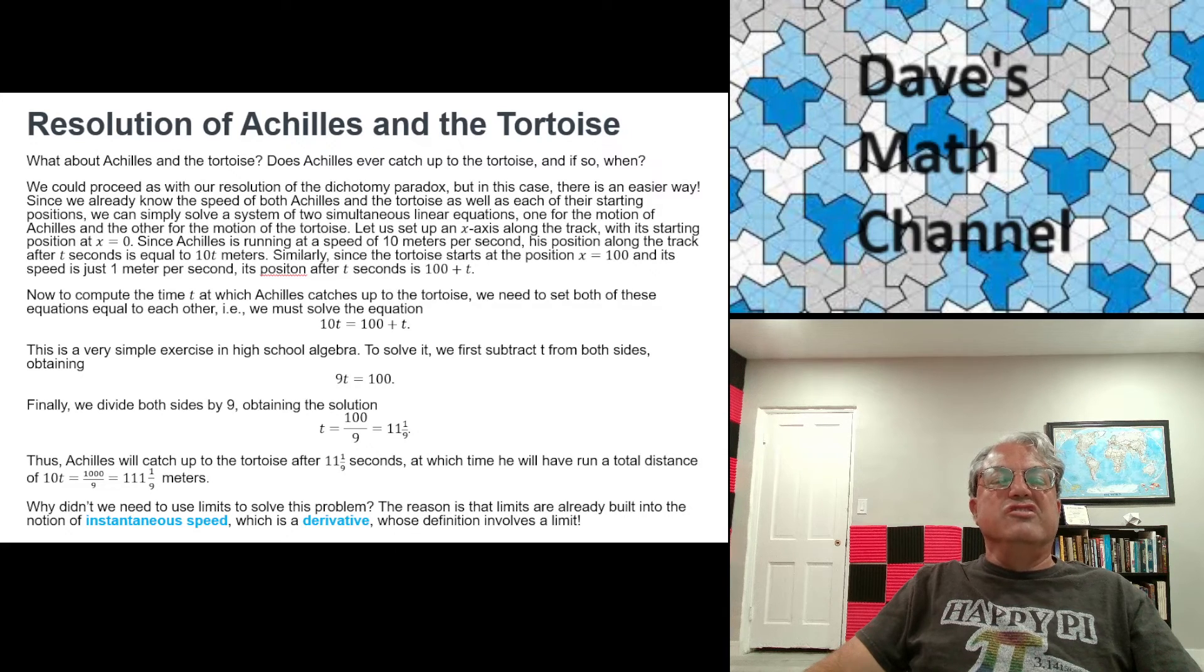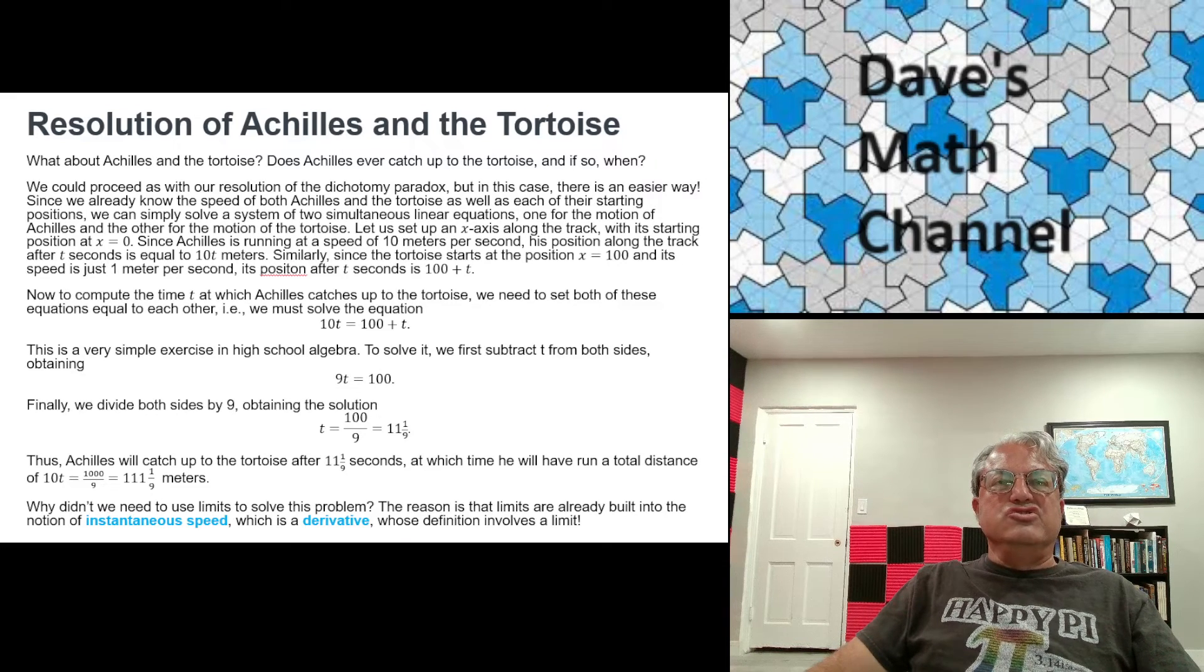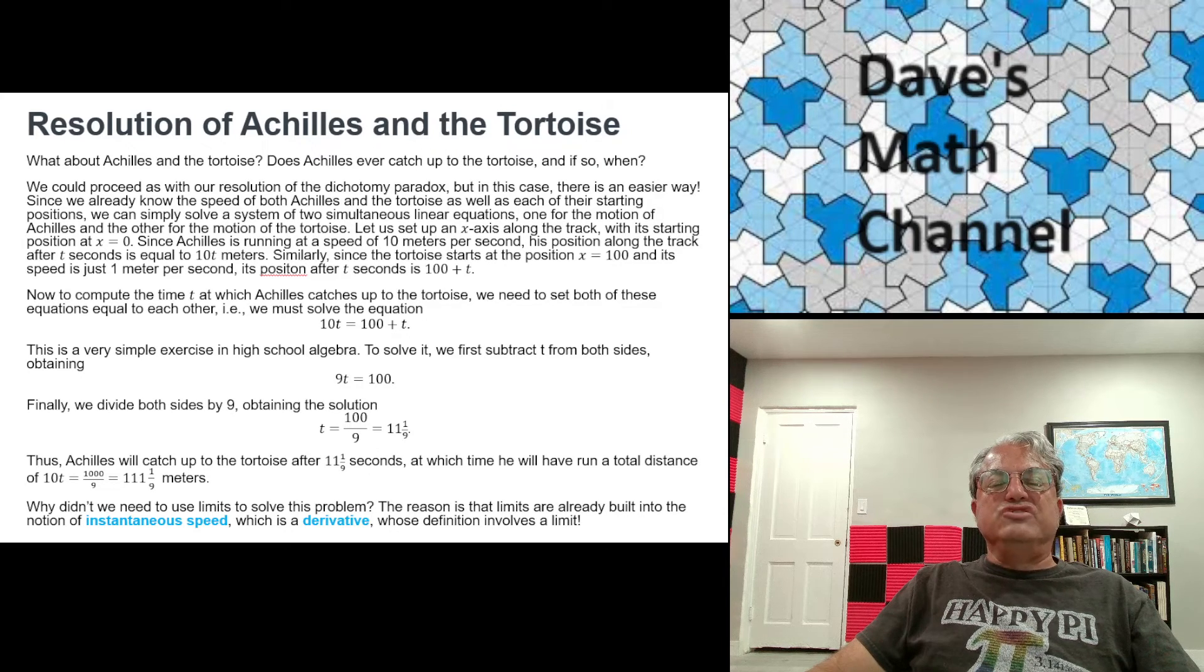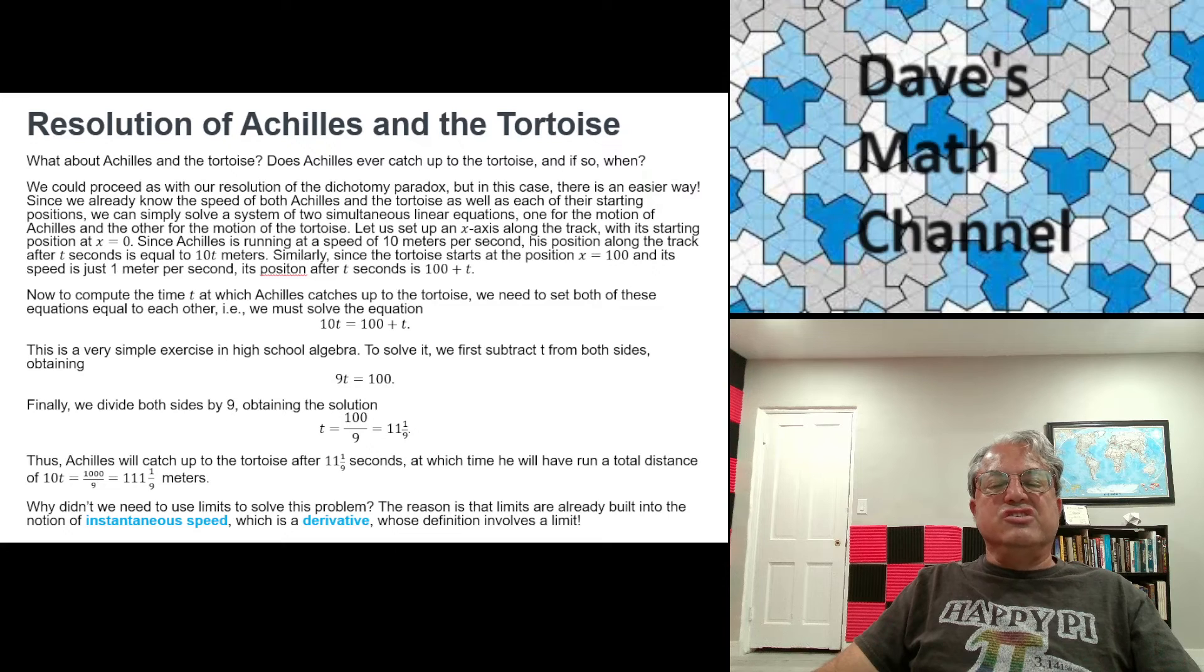And now, what do we do? We have two equations of motion, one for Achilles and one for the tortoise. And we just set them equal to each other. We're trying to solve two simultaneous linear equations. You know, if I had a graph, you'd see two lines, two linear graphs that meet at a point. Two lines that aren't parallel. And these lines are not parallel. They don't have the same slope. So they meet at a point. And we just have to find that point. So we solve this simultaneous set of equations: 10t equals 100 plus t. That's an easy equation to solve. Subtract t from both sides, you get 9t equals 100. Divide both sides by 9. You get t equals 100 over 9, or if you want to write that as a reduced fraction, you write 11 and 1/9th. So it takes exactly 11 and 1/9th seconds for Achilles to catch up to the tortoise.